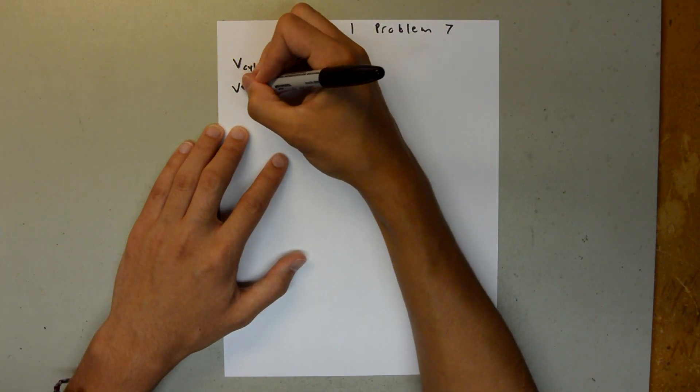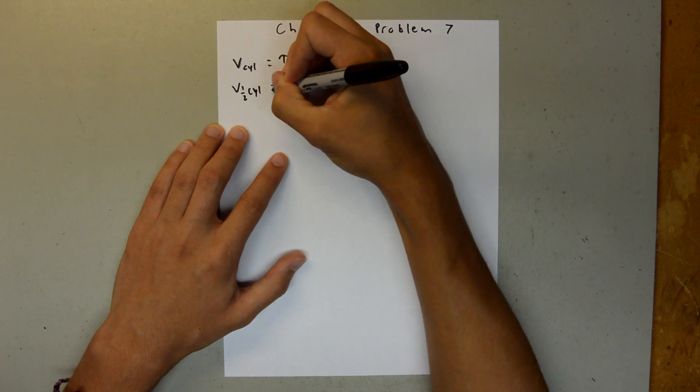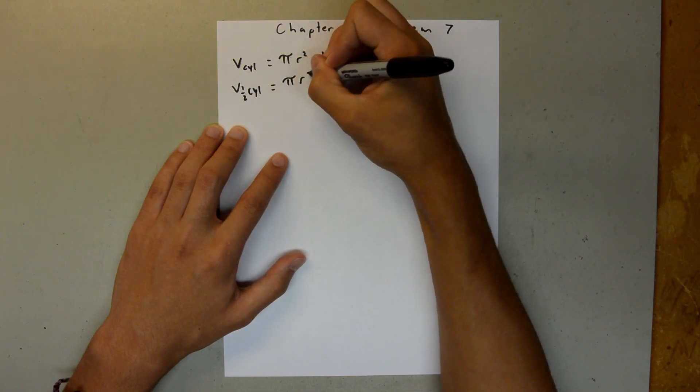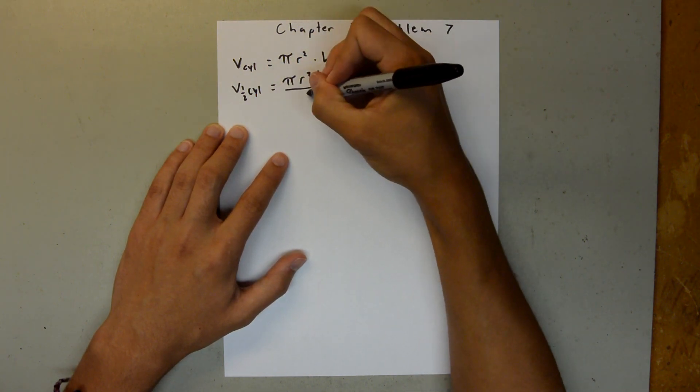Since this is a half cylinder, the volume of a half cylinder is equal to pi r squared h, all of that over 2.